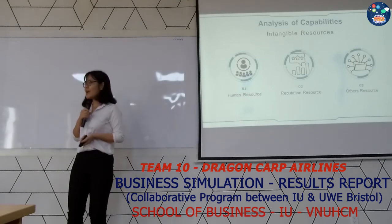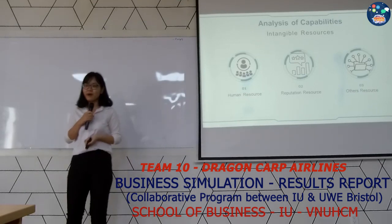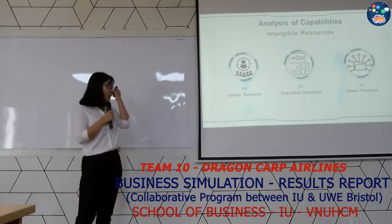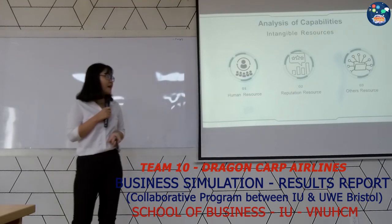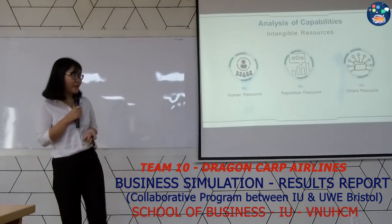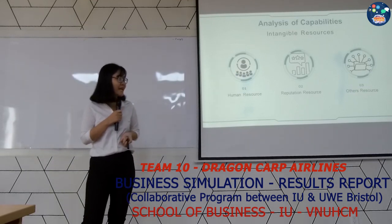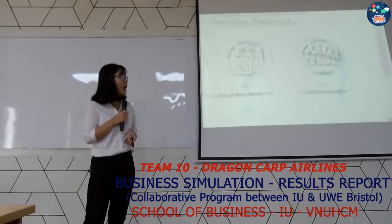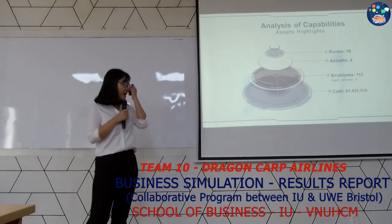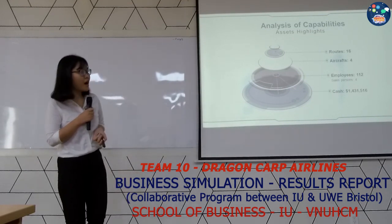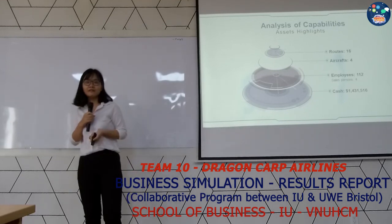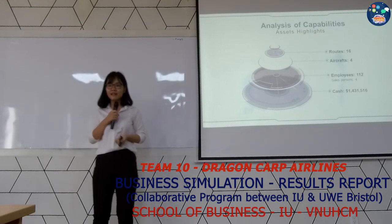Regarding intangible resources, in human resources we have a strong management team and unique programs for training both employees and managers. In reputation, we have our brand name. We also have customer data as another resource. During seven quarters, we accumulated cash up to $1,400,000, and we ranked third in this industry.